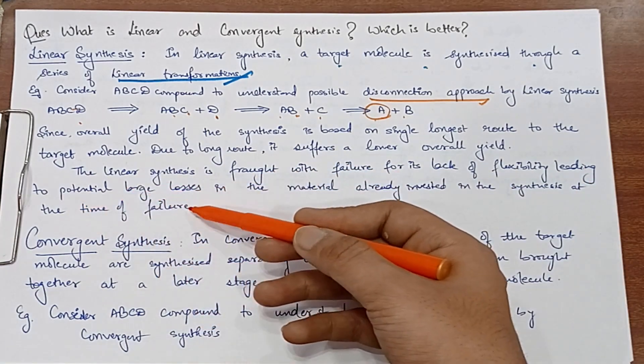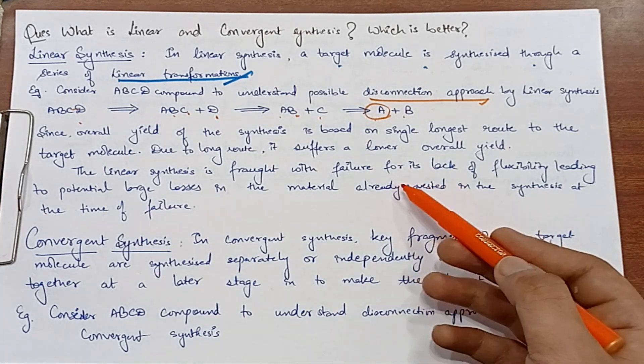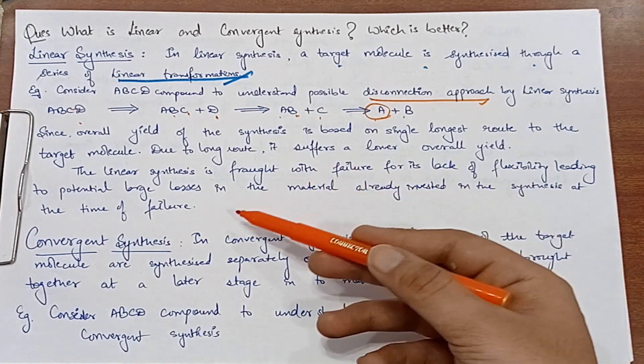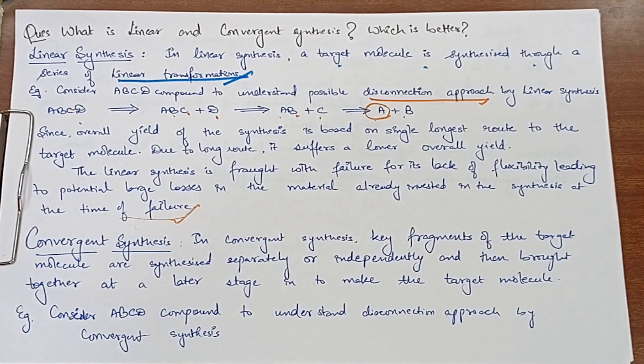Leading to potential large losses in the material. Ismein hamara bahut zyada loss ho raha hai hamara material ka invested in the synthesis at the time of failure. Toh humara jo hai reaction karte time mein hamara paas jo material tha humne, uski kaafi zyada loss ho gaya. Toh humara kya ho gaya? Failure ho gaya is reaction mein yield ka.